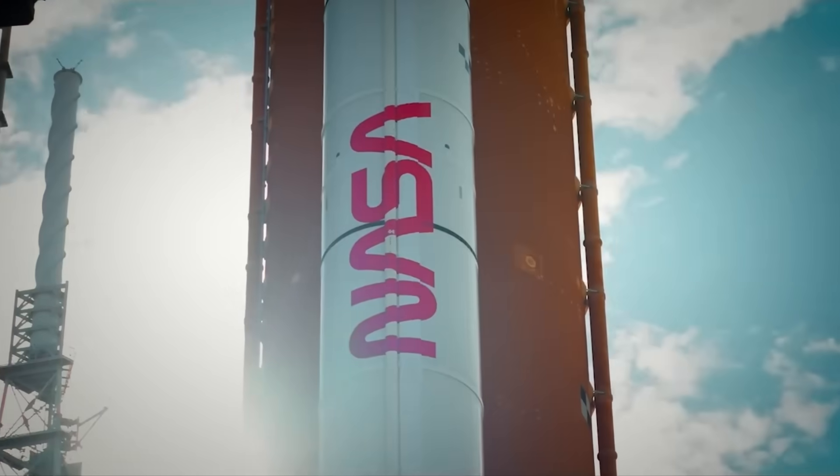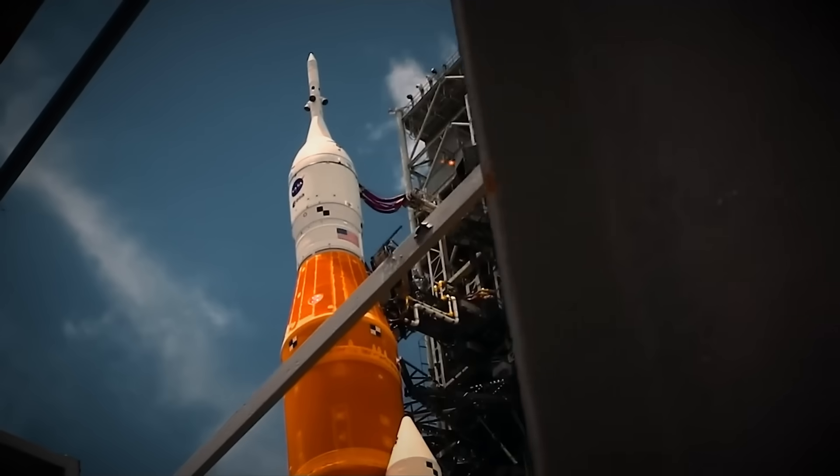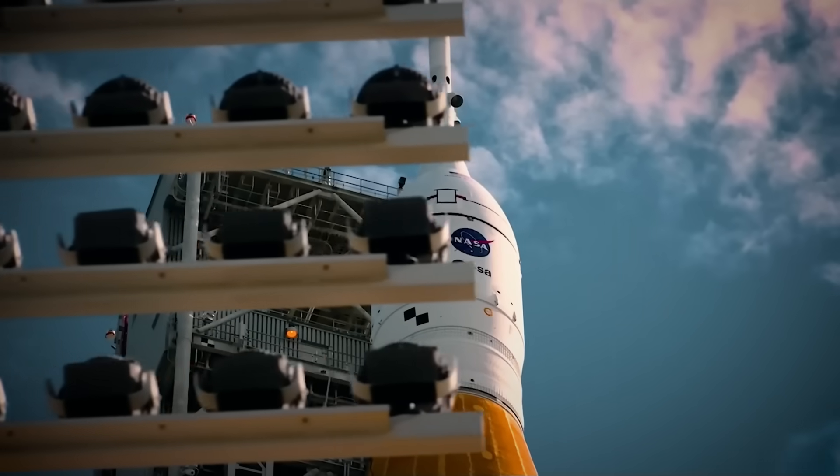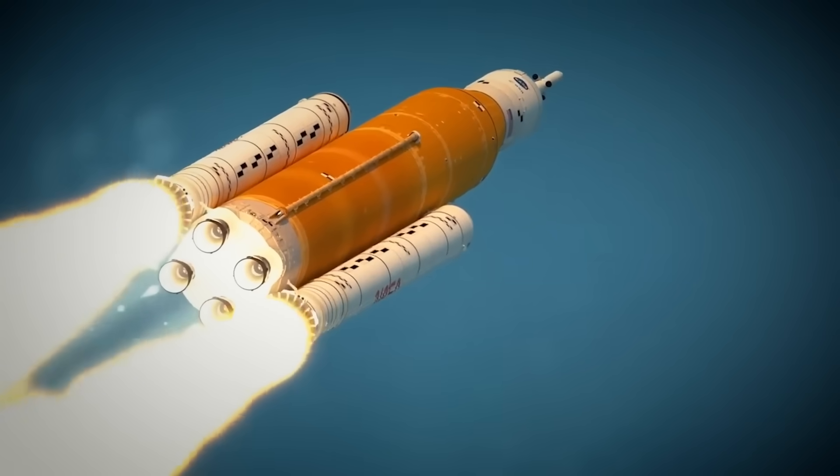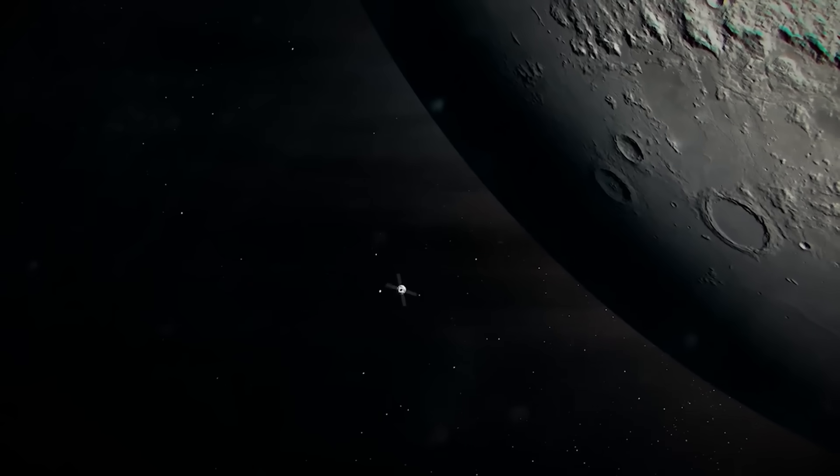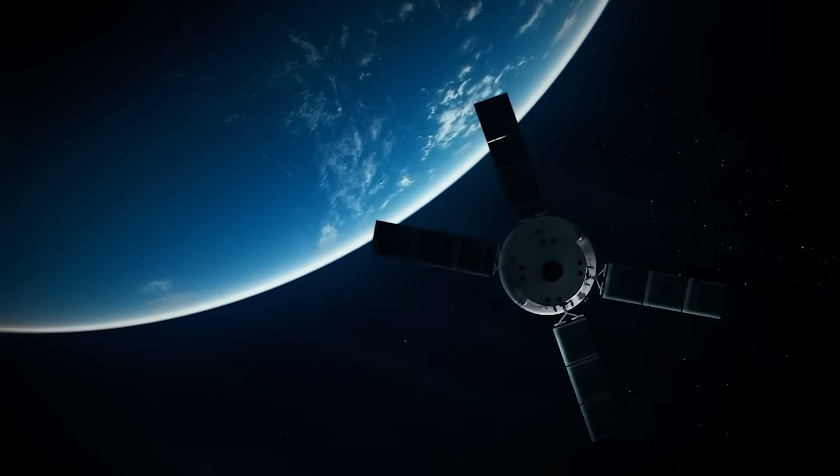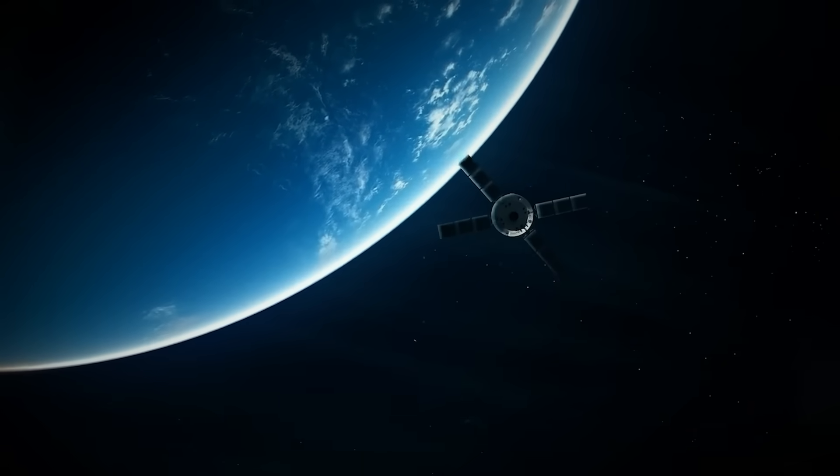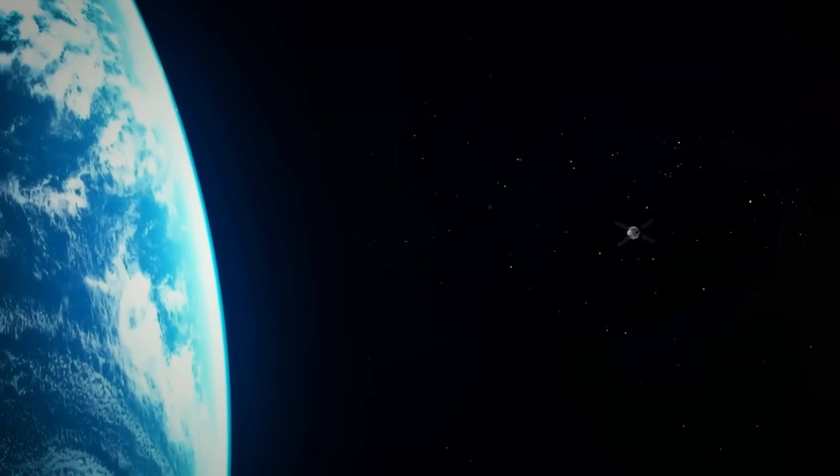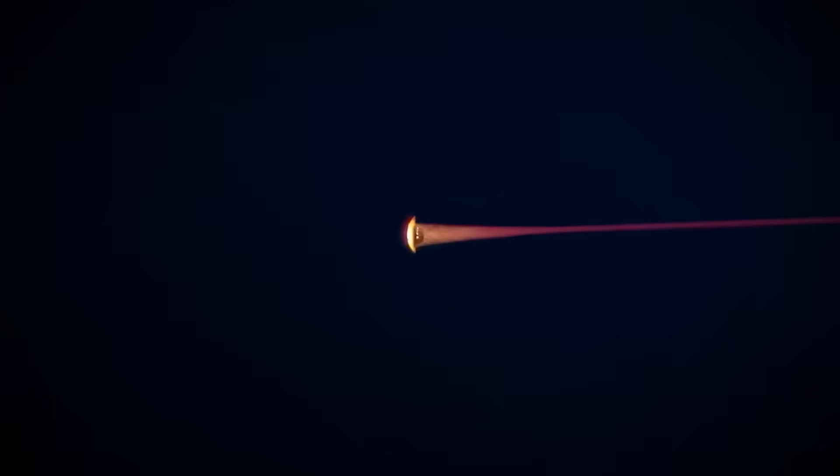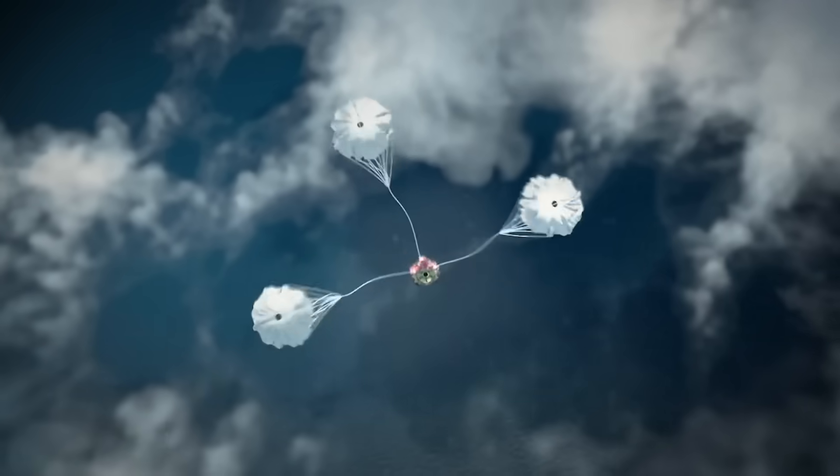For all of its many flaws, the SLS and Orion system can do some pretty amazing things, and we saw that for ourselves on the flight of Artemis 1, as the uncrewed capsule was sent all the way to lunar orbit and back again with no major issues. The real problem is that sending a vehicle to lunar orbit and back is about all that SLS can do. It's missing one very important piece of the puzzle: the landing.